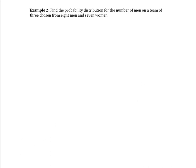In example two, find the probability distribution for the number of men on a team of three chosen from eight men and seven women. So distribution means we're looking for a whole chart. Before we start that, let's name our variables.